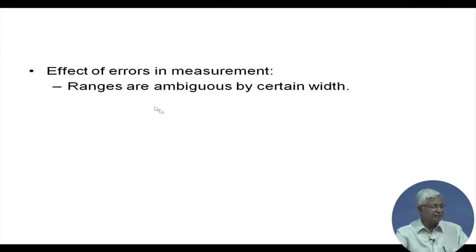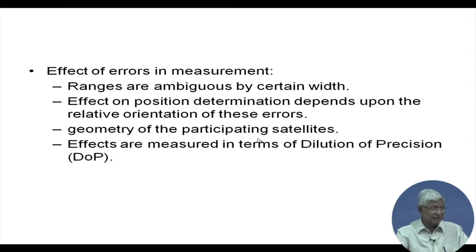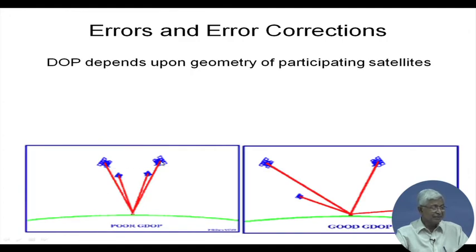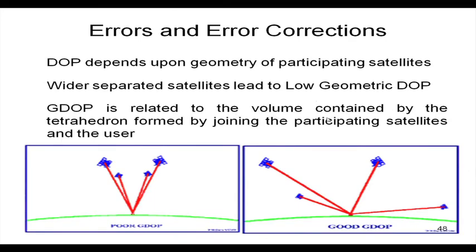The effect of error in measurements depends on the geometry of participating satellites — these effects are measured in terms of Dilution of Precision (DOP). DOP provides the relation between range error and position coordinate error. If satellites selected for PVT are located very nearby, the cross-section of all spheres will be fuzzy; if they are widely separated, the intersection is much sharper. DOP depends on geometry — wider separated satellites lead to low GDOP. DOP is related to the volume of the tetrahedron formed by joining the participating satellites and the user.